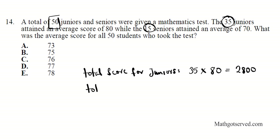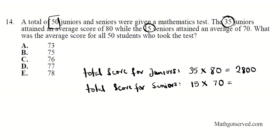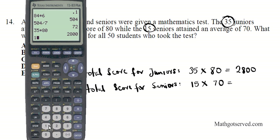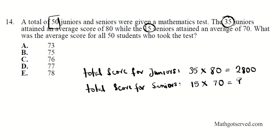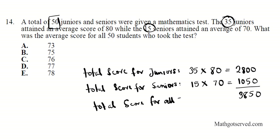For the seniors, there are 15 seniors, multiplied by their average score of 70 — so 15 times 70. That gives us 1050. The total score for seniors is 1050. Adding both together: 2800 plus 1050 equals 3850. This is the total score for all 50 students.